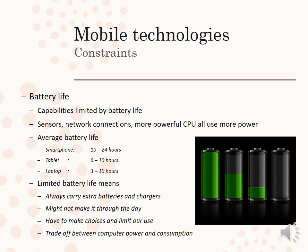Some of the constraints: battery life is a big constraint. There are lots of sensors, network connections, and a more powerful CPU — all of these need more battery life. The average for a smartphone is 10 to 24 hours, a tablet 6 to 10, a laptop 3 to 10. Because of limited battery life, some people carry extra batteries or their charger, and they may have to limit their use of their device. There's a trade-off between computer power and consumption — the more powerful a device is, the more it will consume.